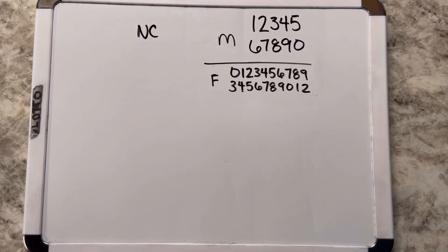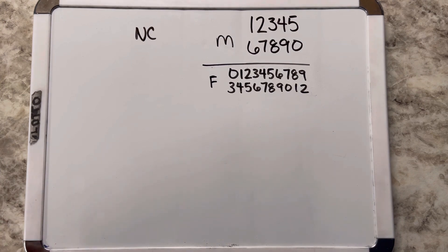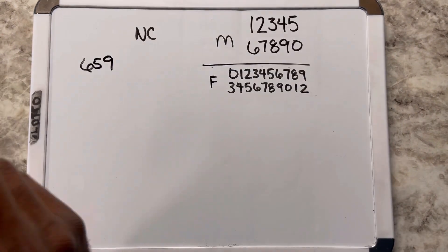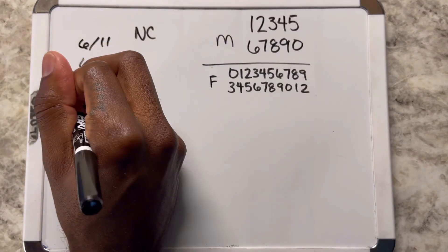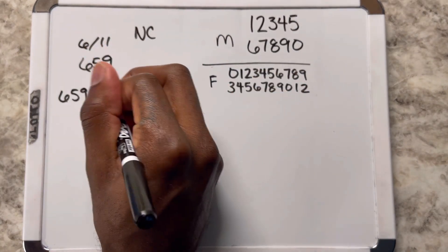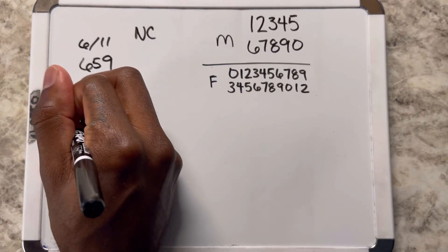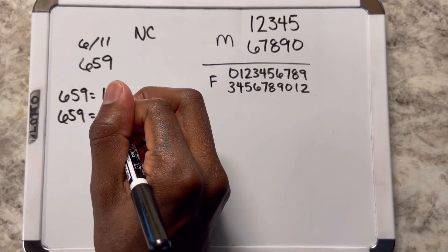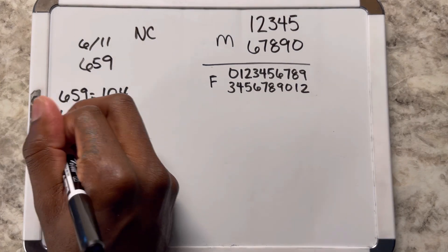I'm gonna show y'all exactly what I did for North Carolina. The number is 659, came out on the 11th. We're gonna convert this 659 into the mirror number, so 104. Then we're gonna convert it into the flip number, which is 982. From there, we're gonna convert 104 and 982 into the flip number. 982 goes to 215.